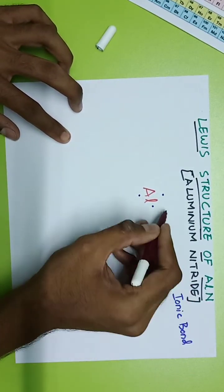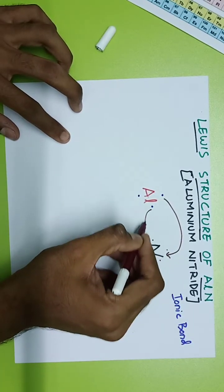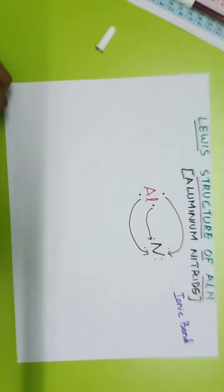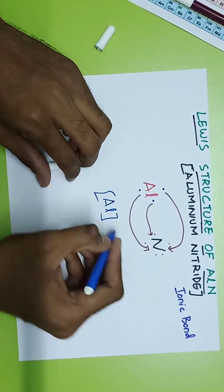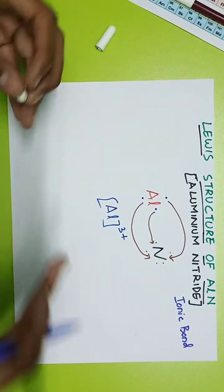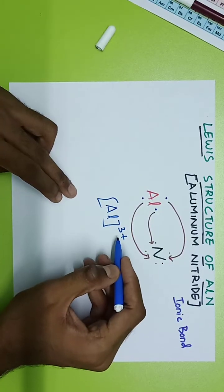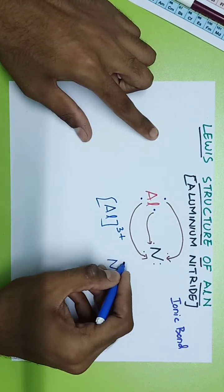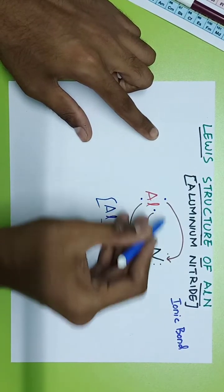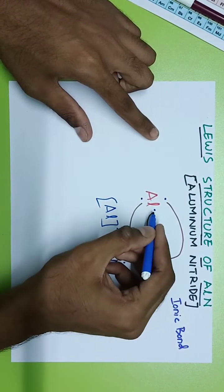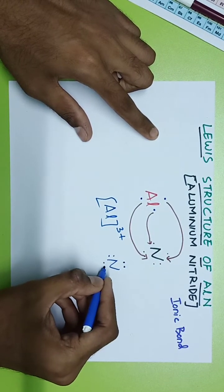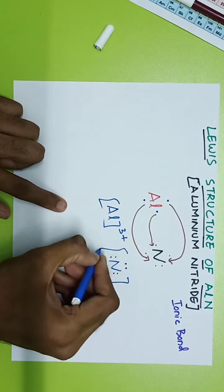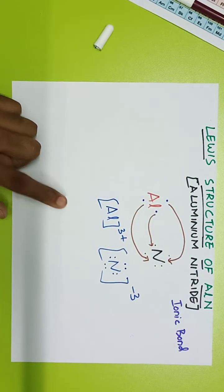Aluminum's three electrons transfer: one goes here, another goes here, and the third goes here. Aluminum is now devoid of all three electrons it donated, so it carries a 3+ charge. Nitrogen receives all three electrons — added to its original five, that gives us one, two, three, four, five, six, seven, eight electrons total.